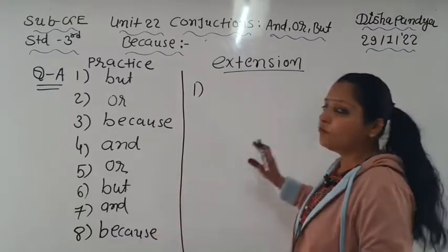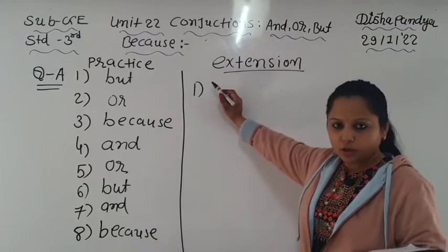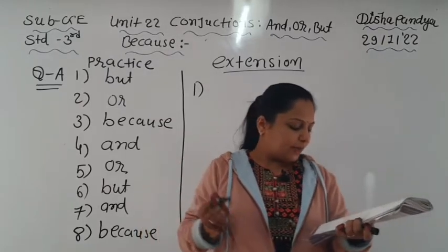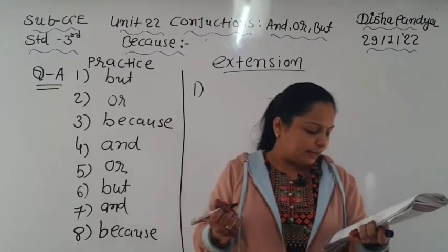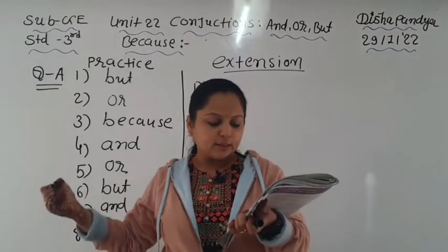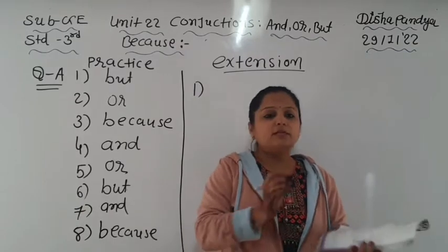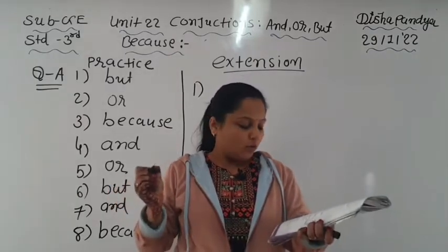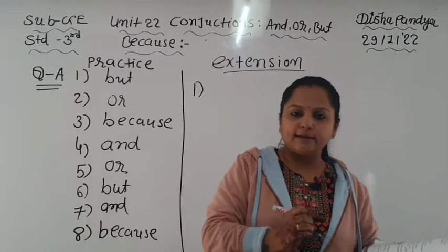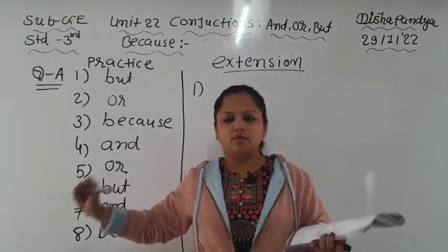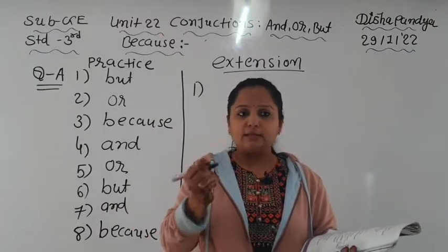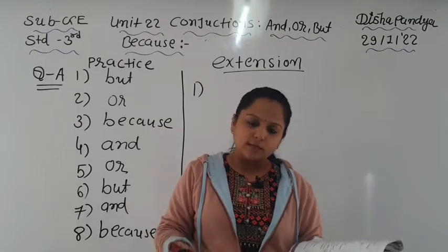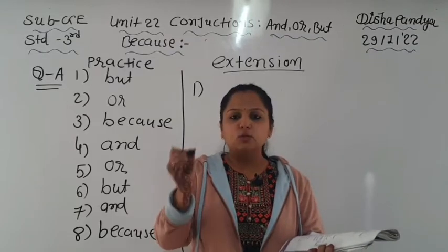We have four conjunctions: 'and', 'or', 'but', and 'because'. The first sentence: 'I am feeling weak. I did not eat breakfast this morning.' He is feeling weak and the reason is that he did not eat breakfast. Whenever we need to give a reason in a sentence, we use 'because'. So we can join this sentence with 'because'.